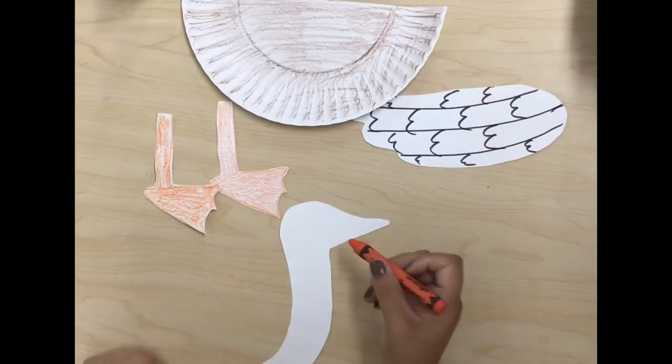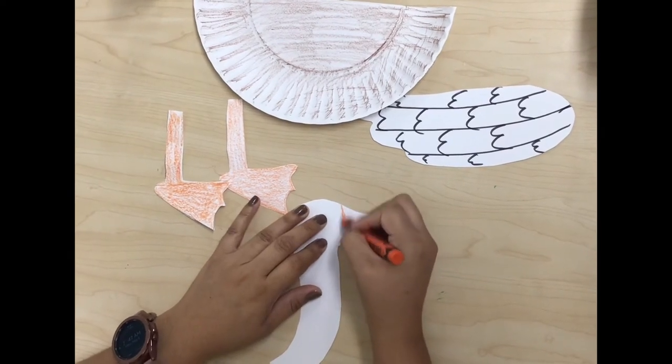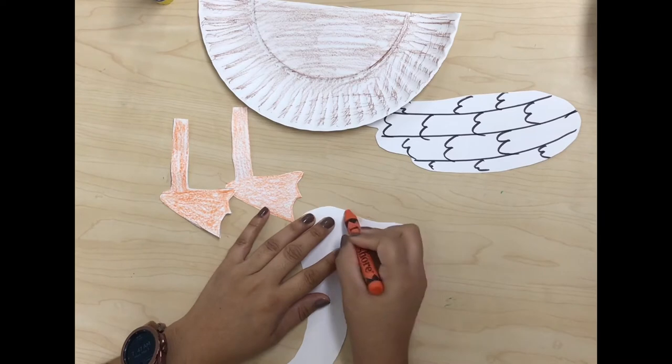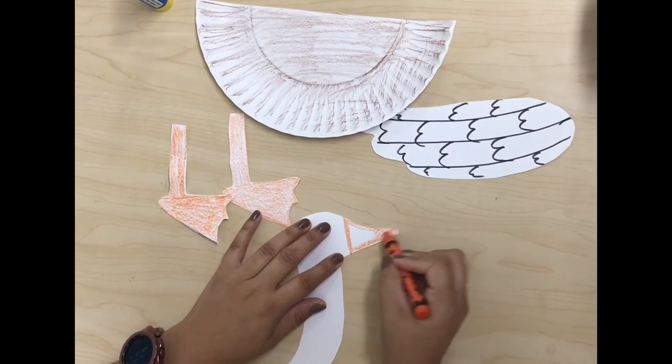Now we're going to color the beak of our goose. This is the beak. We're going to use orange. You can use crayon or marker to color the beak.